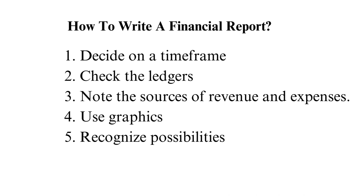To write good financial reports, implement the following tips. Tip 1: decide on a timeframe. Most financial statements are written on an annual or quarterly basis, depending on the terms stated by the Articles of Association (AOA). The AOA outlines the company's expectations for its financial records and general operations. Tip 2: check the ledgers. Look through the data collected and verify that the bank reconciliation has been done. Use these figures when citing the number of liabilities, expenses, assets, and profits the company has. This step also helps you find any missing or hidden information.